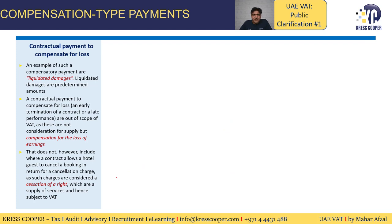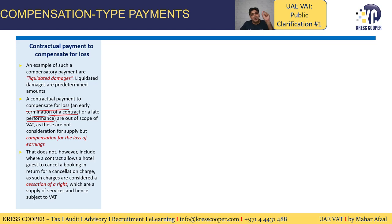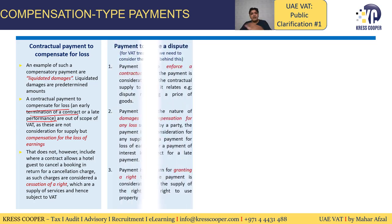Contractual payment to compensate for loss — an example of such compensatory payments is liquidated damages, which are predetermined amounts. Since the amount is predetermined, the VAT impact would have already been considered. Any contractual payment to compensate for loss, such as early termination of a contract or late performance, is out of scope of VAT because these are compensation for loss of earnings. However, if a hotel guest cancels a booking and pays a penalty to the hotel, it will not be considered compensation for loss but rather a cessation of rights, making it subject to tax.